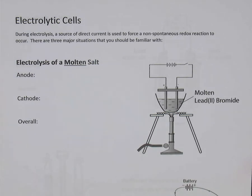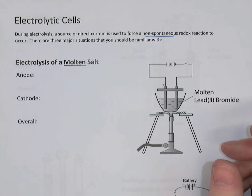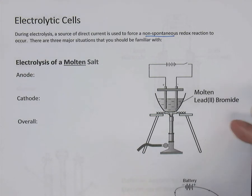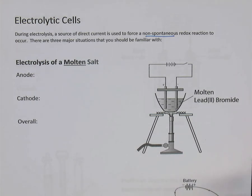In today's video, we're looking at electrolysis. This happens in electrolytic cells, a special type of electrochemical cell. Electrolysis is where we have a non-spontaneous redox reaction. Non-spontaneous means its equilibrium constant is very small, much smaller than one, and the cell potential is negative. We're going to force this non-spontaneous reaction to happen by running a direct current through a solution or molten salt to generate products.